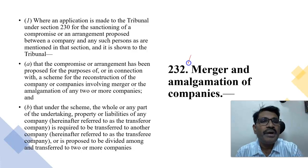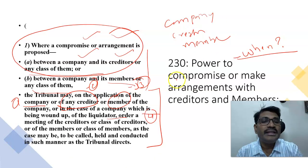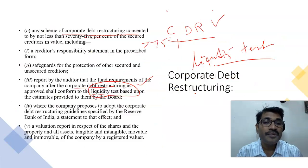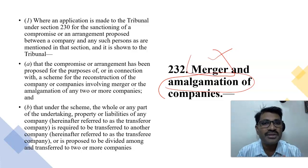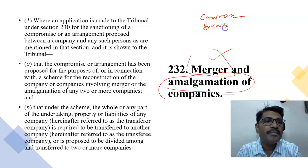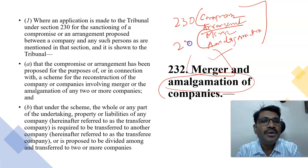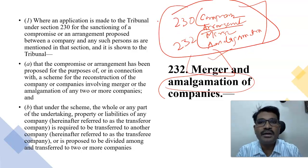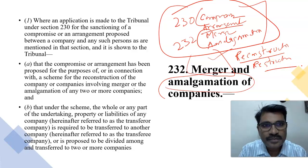In Sections 230 and 231, there is a possibility of the disappearance of one of the companies. The power of the tribunal is: (1) supervisory jurisdiction, and (2) sanctioning powers with regard to winding up where the company fails or is unable to pay back its debts. Section 232 introduces the language of mergers and amalgamations. In Section 230 you read the language of compromise and arrangement; in Section 232 you read the language of merger and amalgamations.